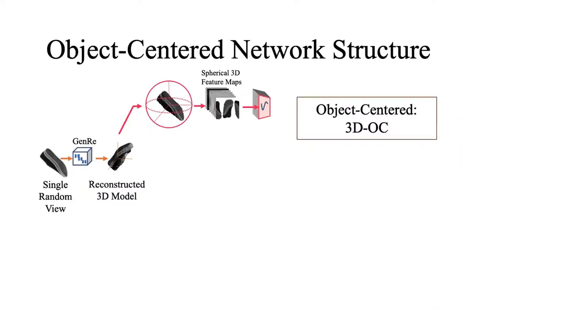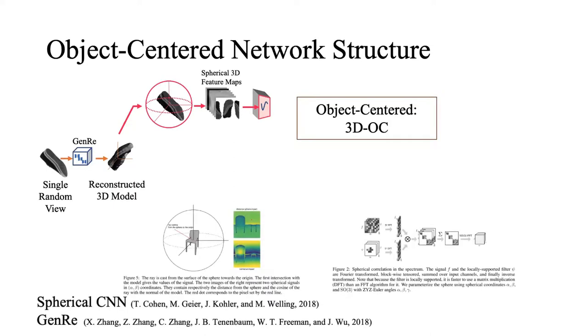The first branch of our network first reconstructs a 3D object from a single 2D input. Then it transforms the 3D shape into spherical maps, and outputs a set of prediction logits.